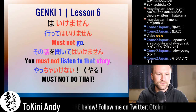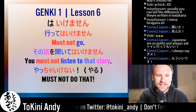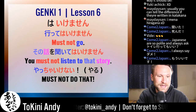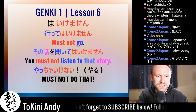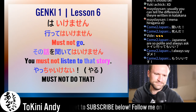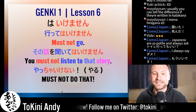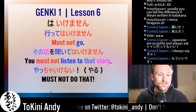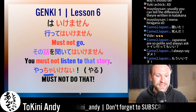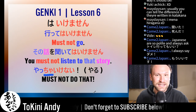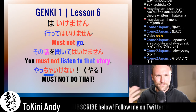Here are some examples: you cannot go to the toilet, you must not listen to that story. And here's a more informal version: 'yatcha ikenai.' The 'te' sort of contracts to 'cha,' and 'ikenai' is the informal negative of 'ikemasen.' Ikemasen is the more formal way; ikenai is the informal way to say the same thing. The verb is 'yaru' — to do informally. So 'yatcha ikenai' — you can't do that!